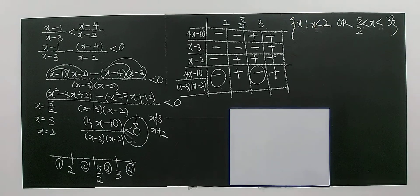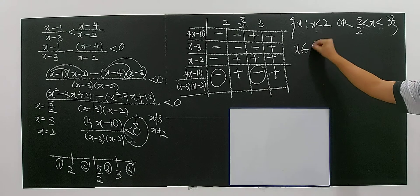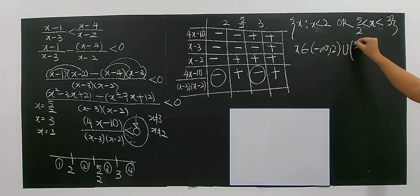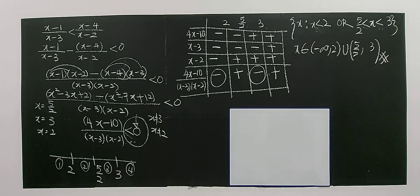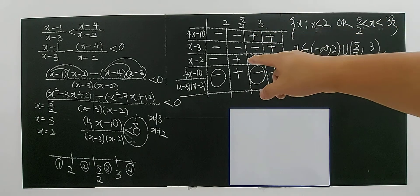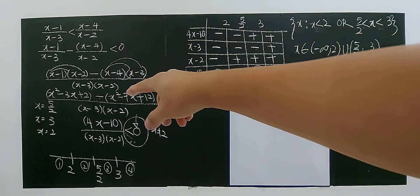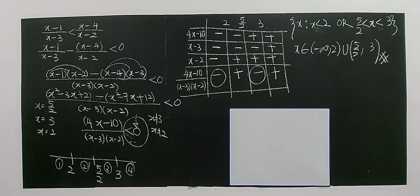The two negative regions give the solution: x less than 2, or x between 5 over 2 and 3. Since there is no equal sign in the inequality, we do not include the critical points. In interval notation, the solution is negative infinity to 2, union 5 over 2 to 3, all open intervals. Remember: one side must be zero and all coefficients of x must be positive before using the table of signs.